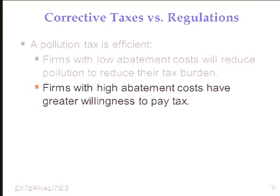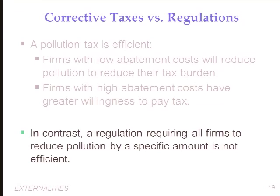In command and control, instead of getting that trade-off, the government says all firms must reduce pollution by a specific amount — clearly no incentive for more efficient abatement companies to take advantage of that. A corrective tax gives firms incentive to reduce pollution as long as the cost of doing so is less than the tax. If a cleaner technology becomes available and reduces abatement costs, firms will adopt it to avoid the tax. One big problem in the US and elsewhere is that without these incentives, there's no motivation to innovate and invest in cleaner technologies.